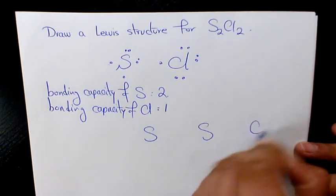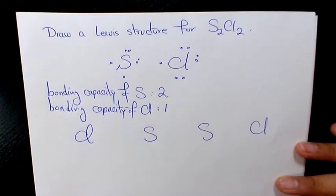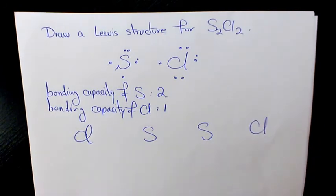After that, we need to add up the number of valence electrons available in an atom of each of the elements. This number represents the total number of electrons, or the number of dots you will draw in your Lewis structure.